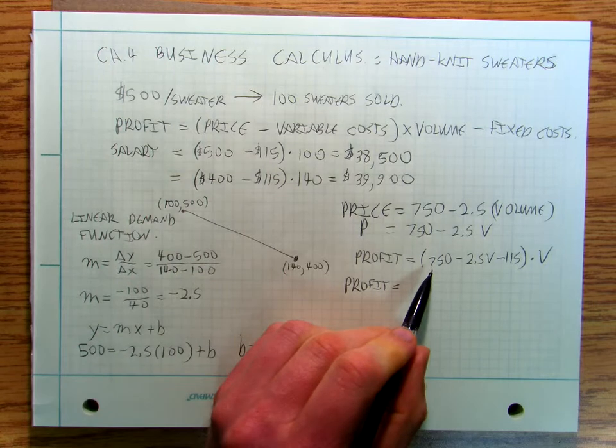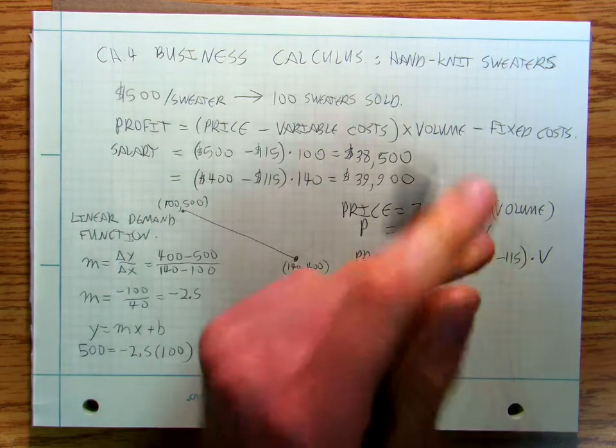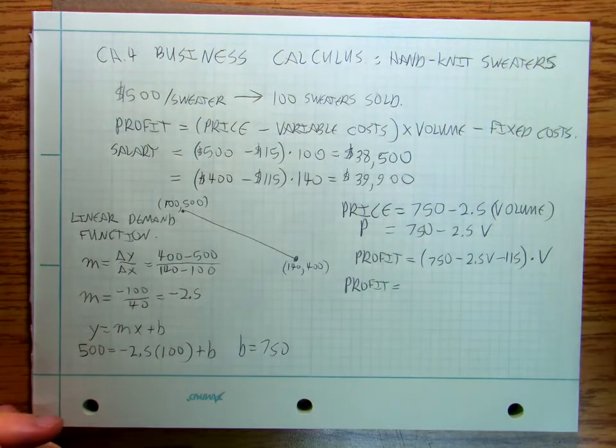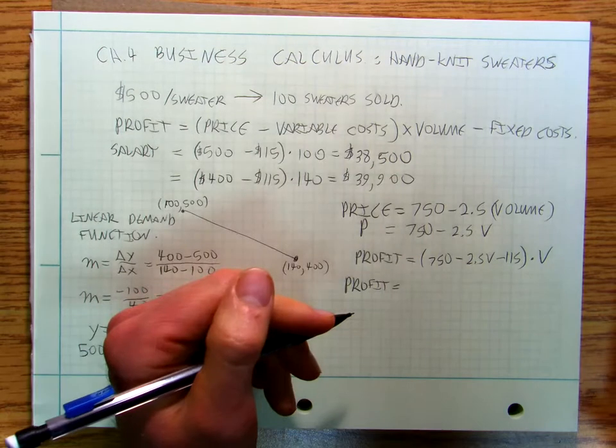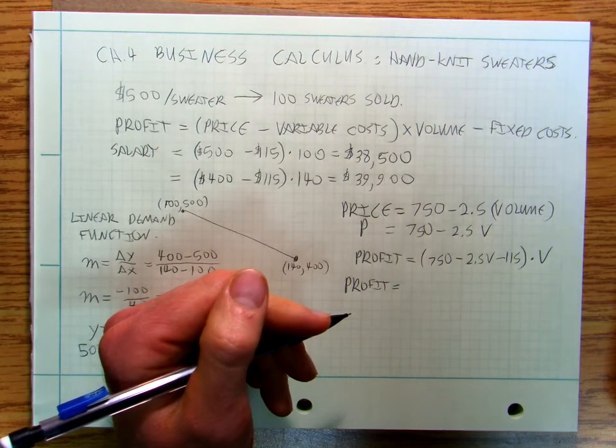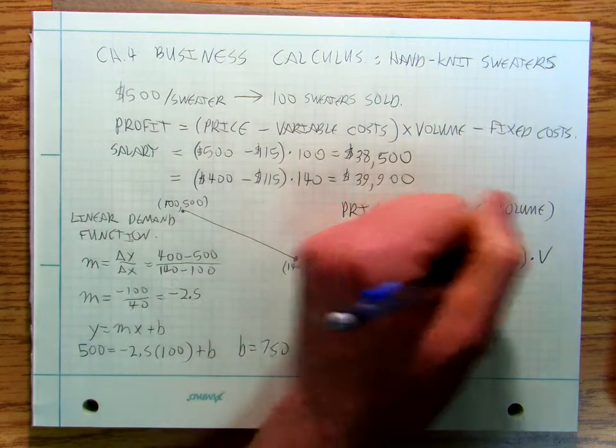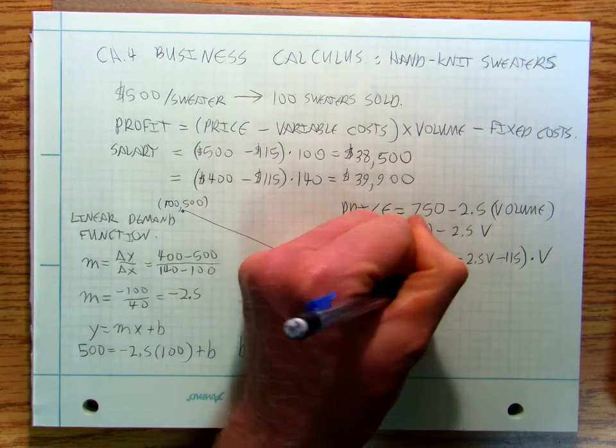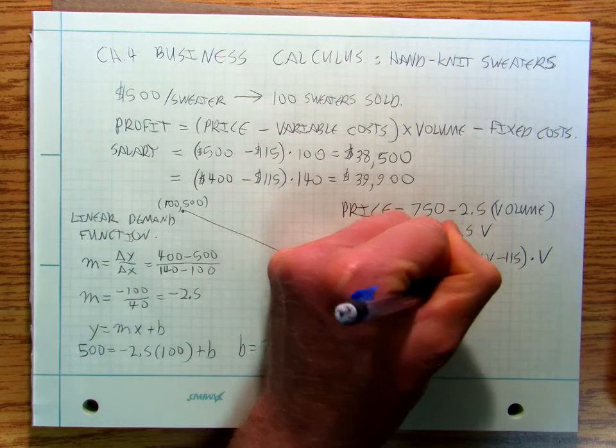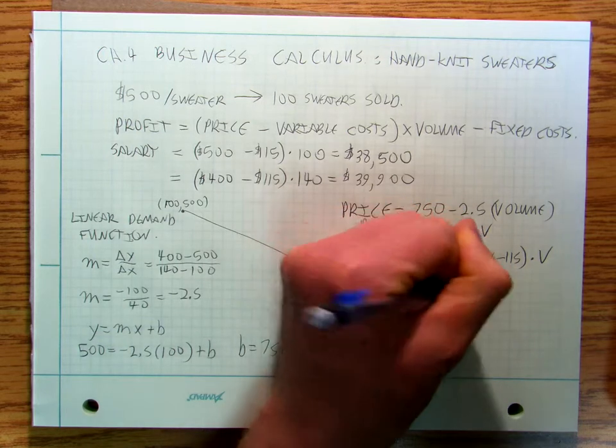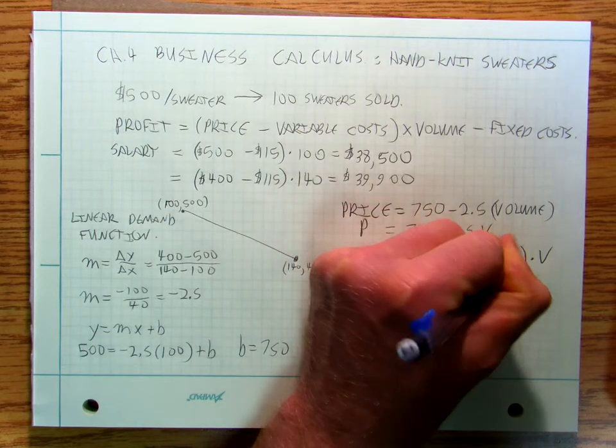And so if I do this out my profit is equal to 750 minus 115, 635. So it's going to be, and then distributing that in I'm going to get negative 2.5V squared plus 635V. So max profit.